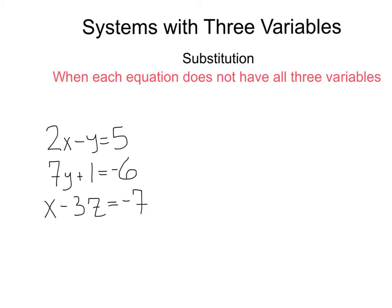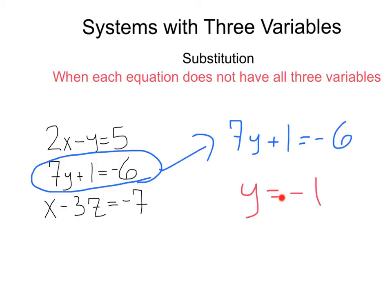Here, in this second equation, we've got 7y plus 1 equals negative 6. That only has one variable. We can solve that. Solving for that, we're going to get y equals negative 1. Let's hold on to this and see if we can use it.